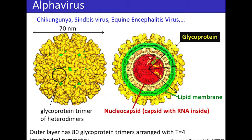The outer layer consists of the membrane and transmembrane glycoproteins, which span the membrane and interact with the nucleocapsid on the inside. The nucleocapsid may or may not have icosahedral symmetry, but the outer layer is comprised of 80 glycoprotein trimers arranged with T=4 icosahedral symmetry.